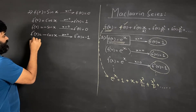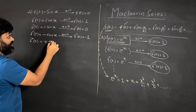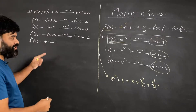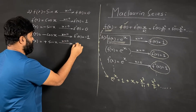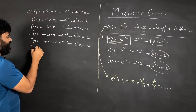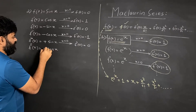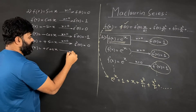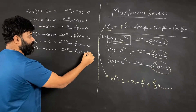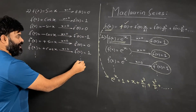For the fourth derivative, the derivative of negative cos x gives positive sin x — be careful with signs. Putting x equal to 0, sin 0 is 0, so the fourth derivative at 0 is 0. The fifth derivative of sin x is cos x, which is positive, and putting x equal to 0 gives 1. You can see there's an alternating pattern: 1, 0, minus 1, 0, plus 1, and so on.